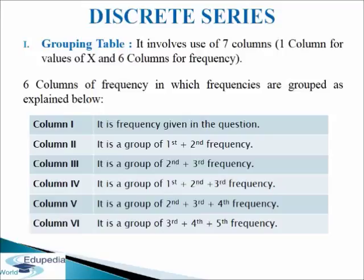Column 4 contains groups of frequencies in threes starting from the first frequency — that is, first plus second plus third frequency. Column 5 contains groups of frequencies in threes starting from the second frequency, leaving the first — that is, second plus third plus fourth frequency. Column 6 contains third plus fourth plus fifth frequency. The highest total in each column is marked, because this total is the base to make entries in the analysis table. This total refers to probable values of mode according to each column.